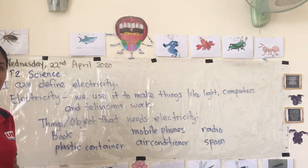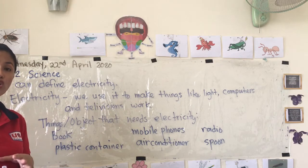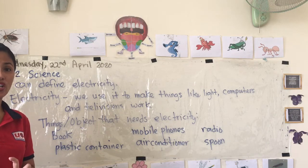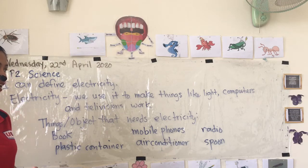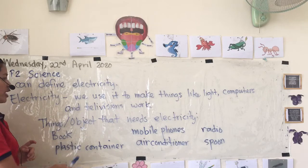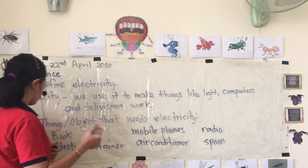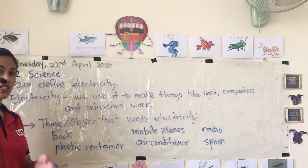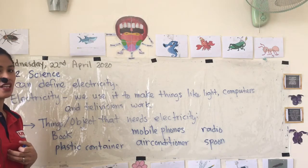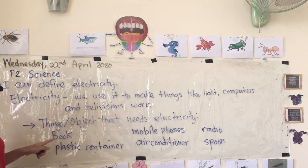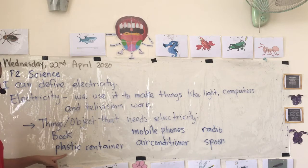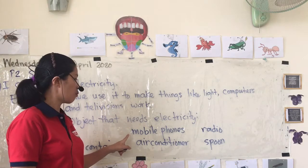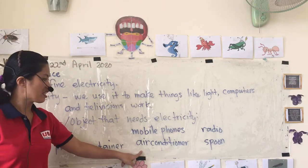Now I have here some words, and we are going to identify if each thing needs electricity or not in order for it to work. We will put a check if it needs electricity, or an X if it does not. The words are: book, plastic container, mobile phones, air conditioner, radio, and spoon.